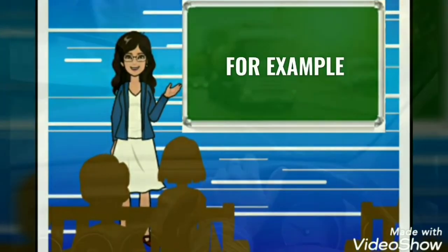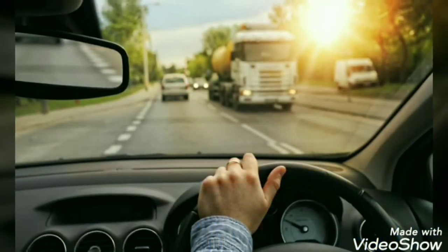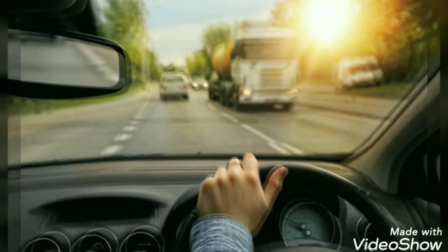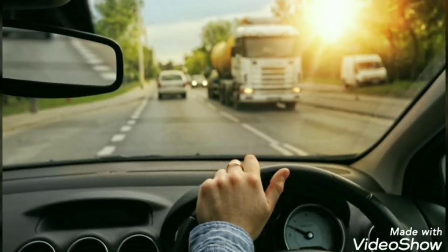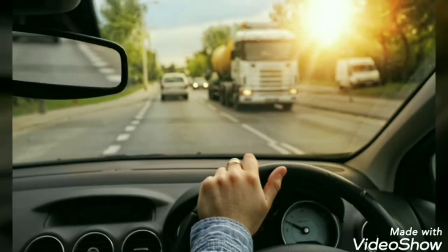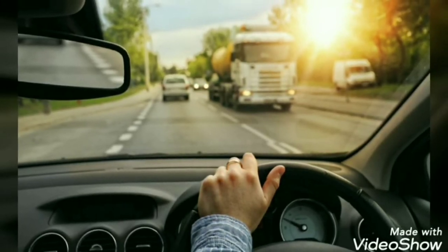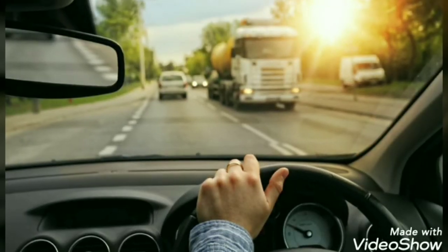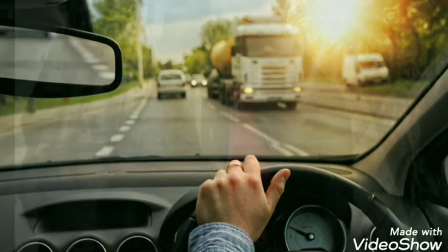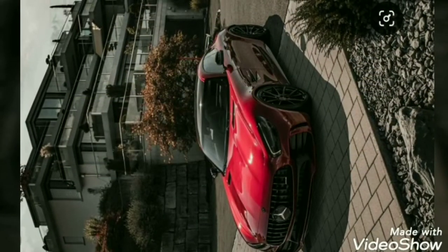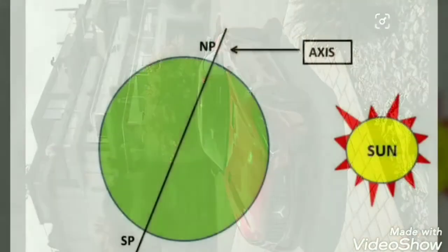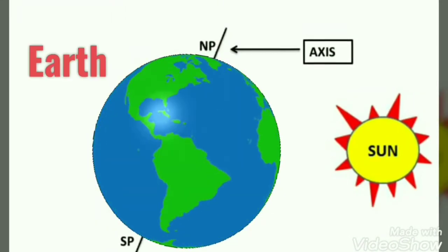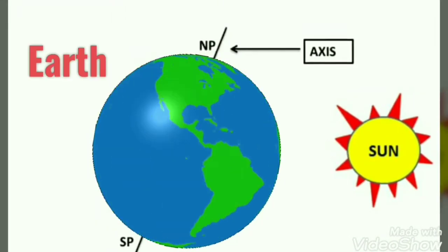You can understand it from the given example. Suppose we are traveling in a car. We see through the window that the trees and buildings on the roadside seem to move past in the opposite direction. But we know it is the car that is moving and not the objects outside. In the same way, it is the earth that is moving and not the sun.